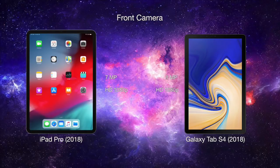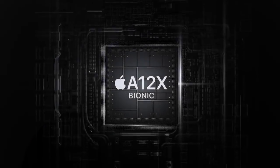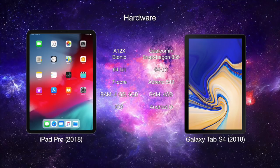The iPad Pro comes with a 7MP TrueDepth camera system while the Galaxy Tab S4 has an 8MP camera, both having the capability of recording HD 1080p videos. Both tablets also use their front camera systems for facial authentication. The iPad Pro has Apple's A12X Bionic chipset with a 64-bit architecture and 7-core GPU, while you're getting a Qualcomm Snapdragon 835 with 64-bit and Adreno 540 GPU on the Galaxy Tab S4.